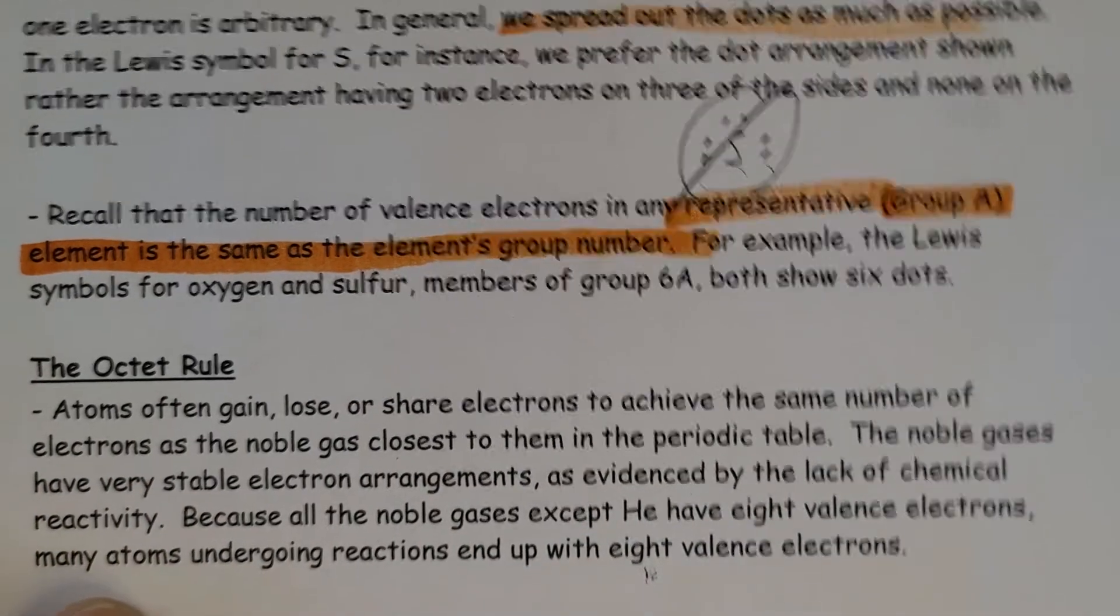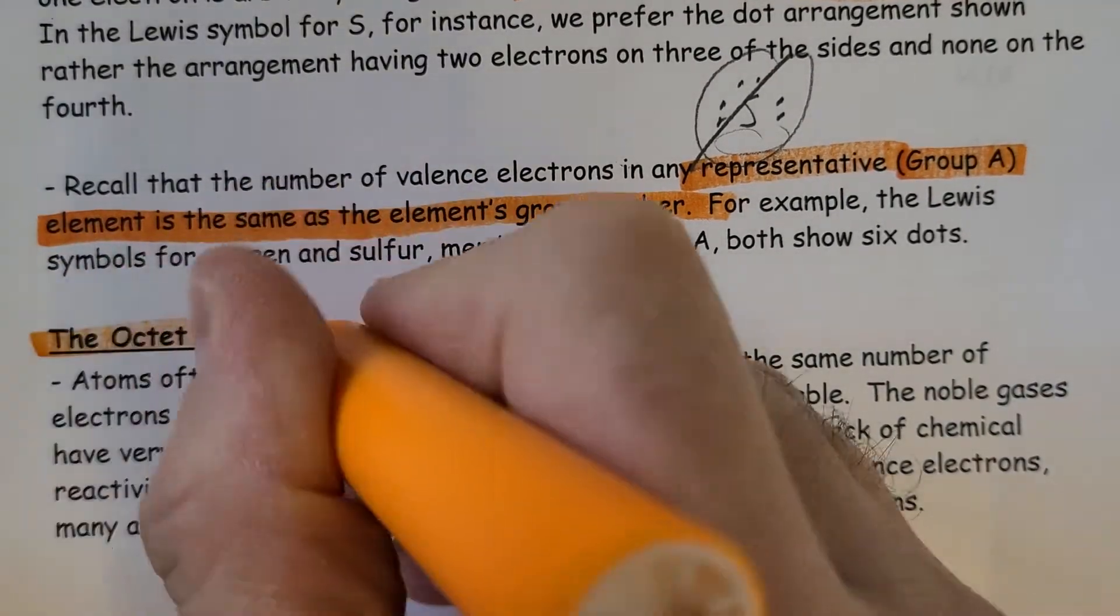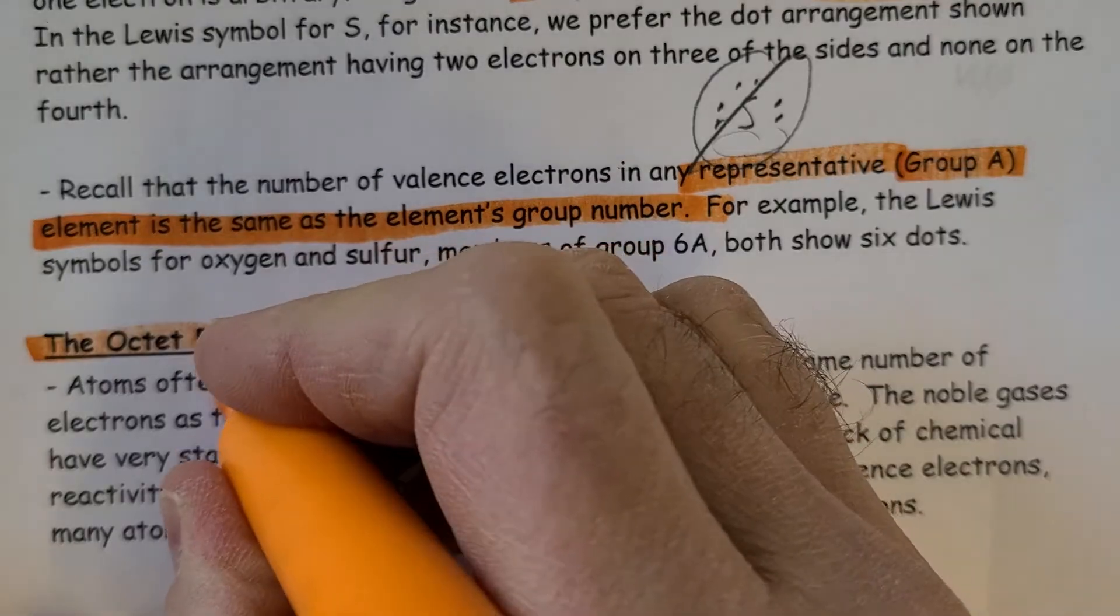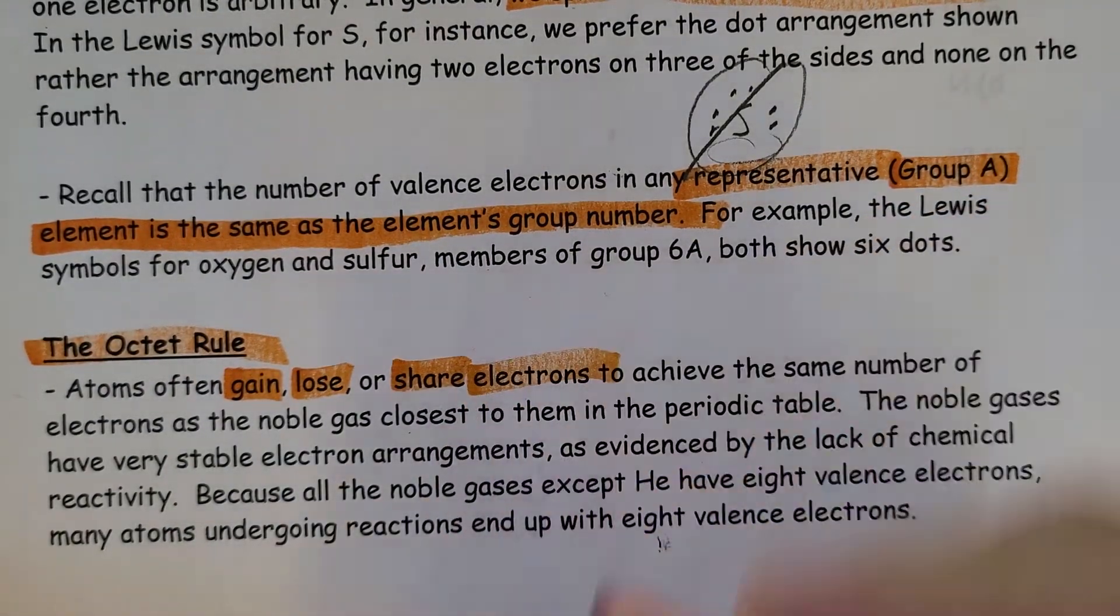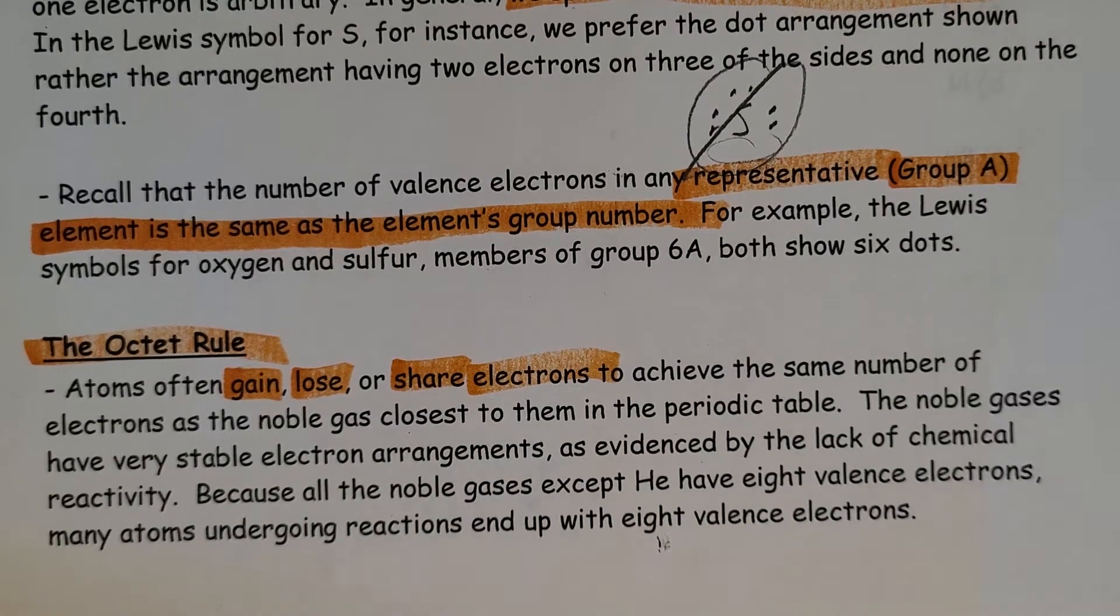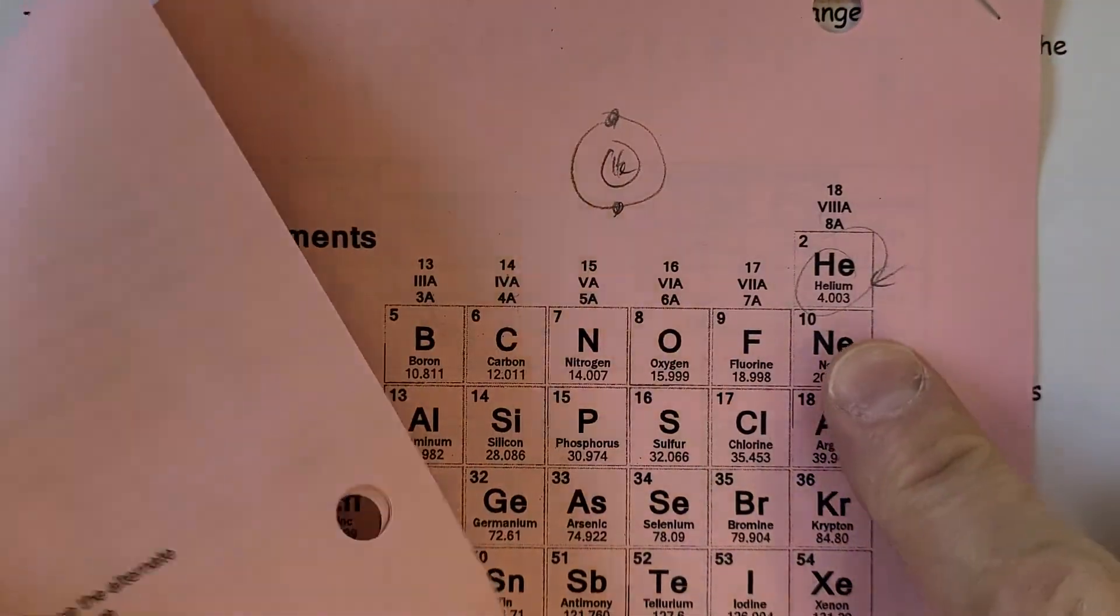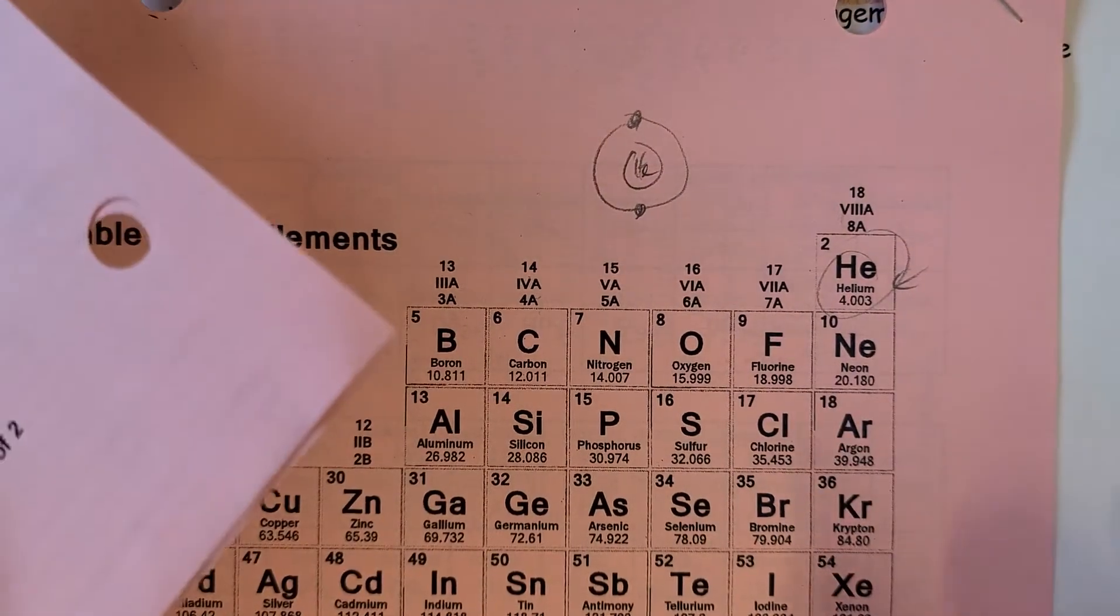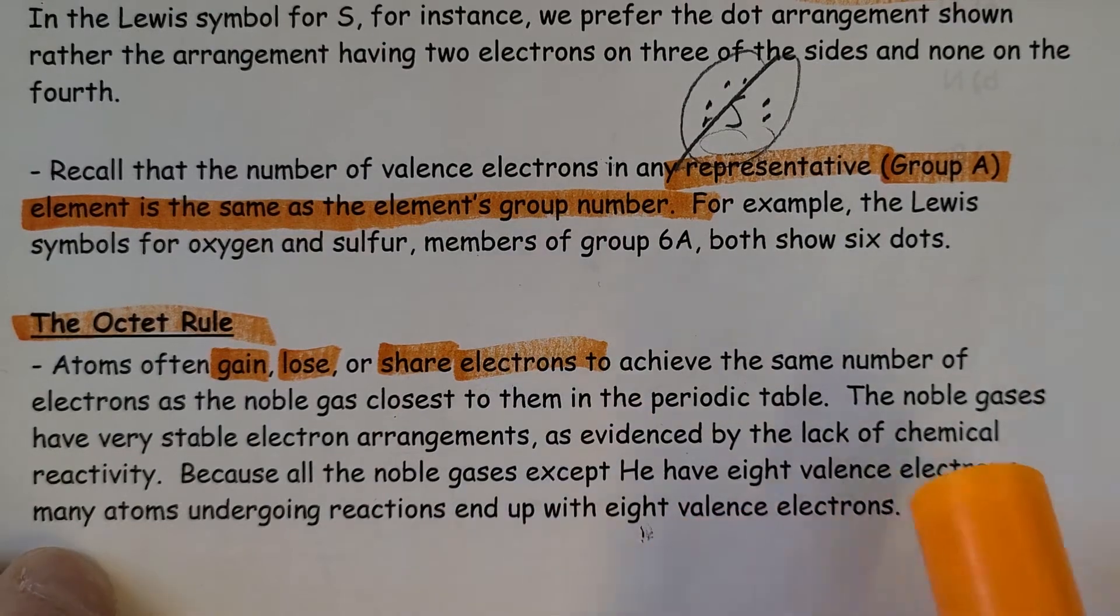Which brings us to the octet rule. Atoms will gain, lose, or as we'll see, share electrons in order to achieve the same number of electrons as the noble gases. And of course, the noble gases have eight valence electrons, with the exception of helium.